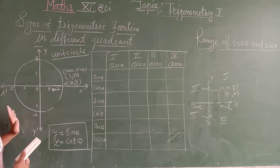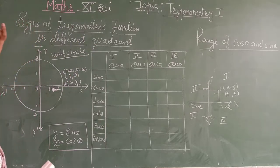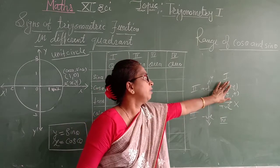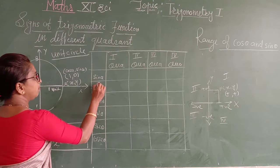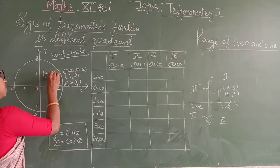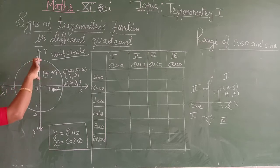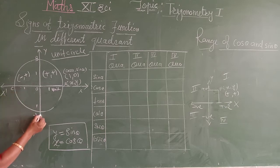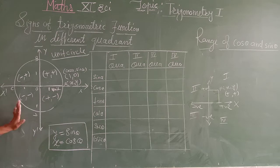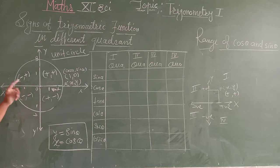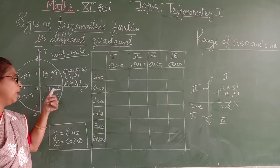Now we will look at the sign in each quadrant. In the first quadrant, x and y are both positive. In the second quadrant, x is negative and y is positive. In the third quadrant, both x and y are negative. In the fourth quadrant, x is positive and y is negative. This is consistent with what we see on the coordinate axes: right is positive, left is negative, up is positive, down is negative.